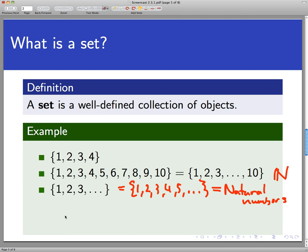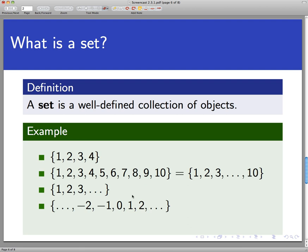And here's the last example here. The third example was a set that had infinitely many elements whereas the first two only have finitely many elements. This last one has infinitely many elements as well except it's infinite on both sides. So this is basically all whole numbers. Otherwise known as the set of integers.